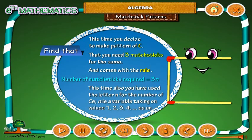This time also you have used the letter N for the number of matchsticks. N is a variable taking on values 1, 2, 3, 4 and so on.